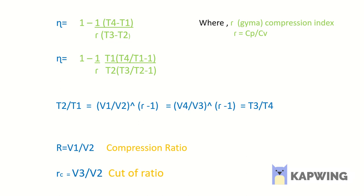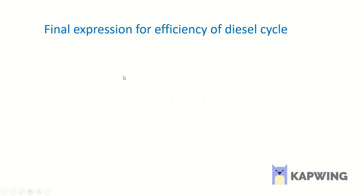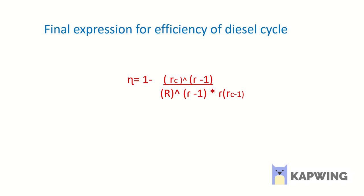Substituting the temperature-volume relations, the compression ratio, and the cutoff ratio into the expression, we get the final efficiency formula: efficiency equals 1 minus Rc^gamma minus 1, divided by the compression ratio to the power (gamma minus 1). This is the final expression for the efficiency of the diesel cycle.